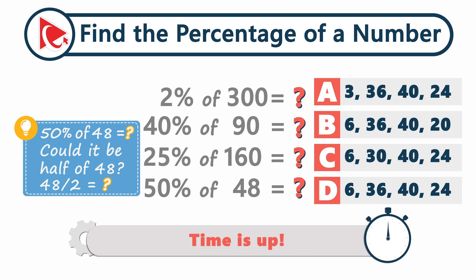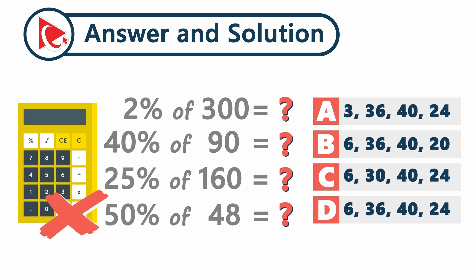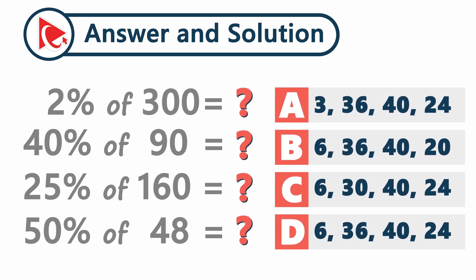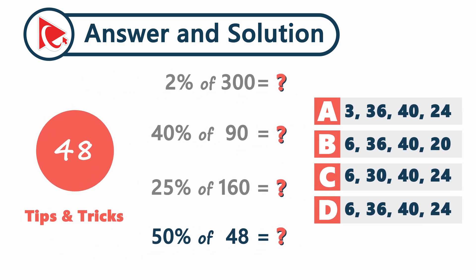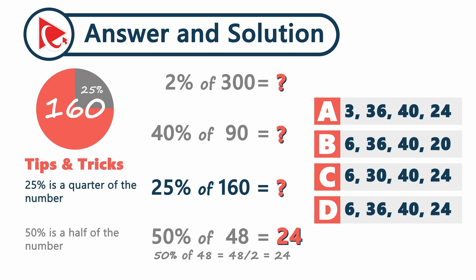Time's up. We're solving without a calculator, so let me equip you with the tools to succeed. We'll solve each problem one by one. The simplest: 50% of 48 is just half of 48, which is 48 divided by 2 — that's 24. The next: 25% of 160. Remember that 25% is simply a quarter of a number, so 160 divided by 4 equals 40.